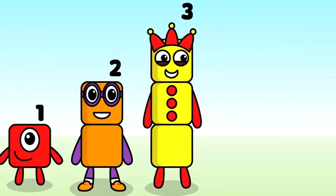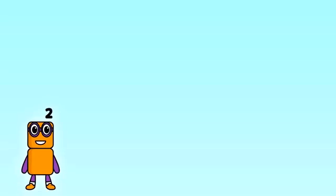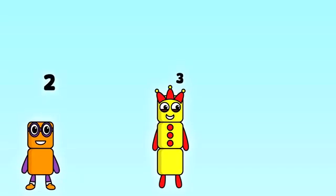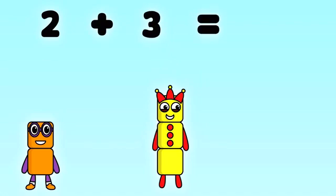5 numberblocks in a row. 2 plus 3 equals 5.